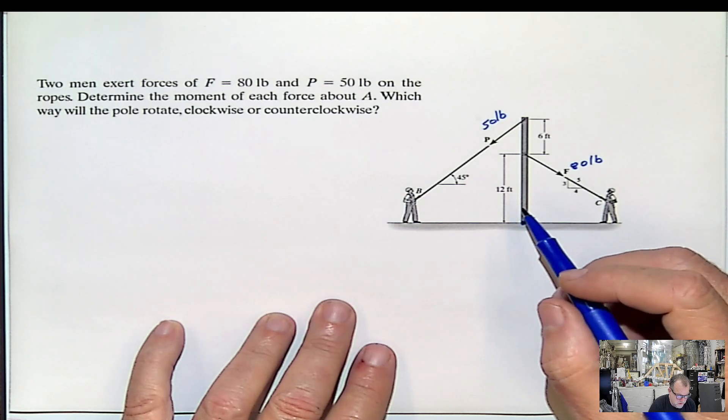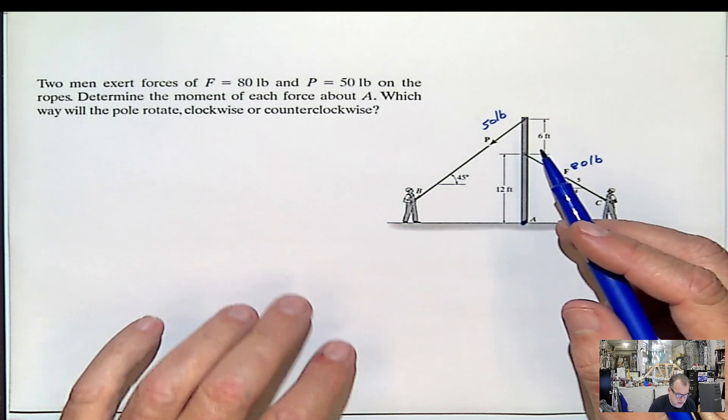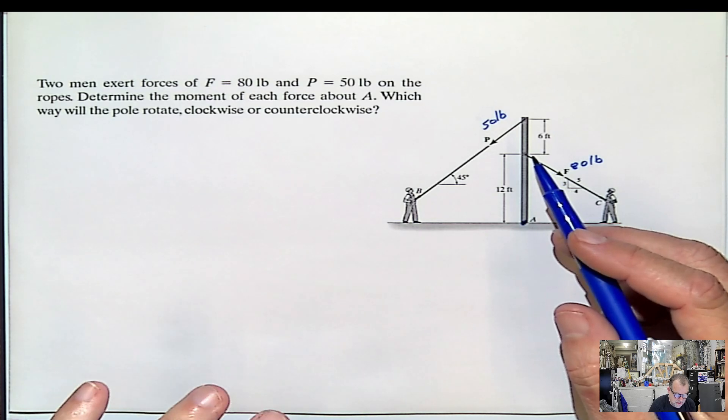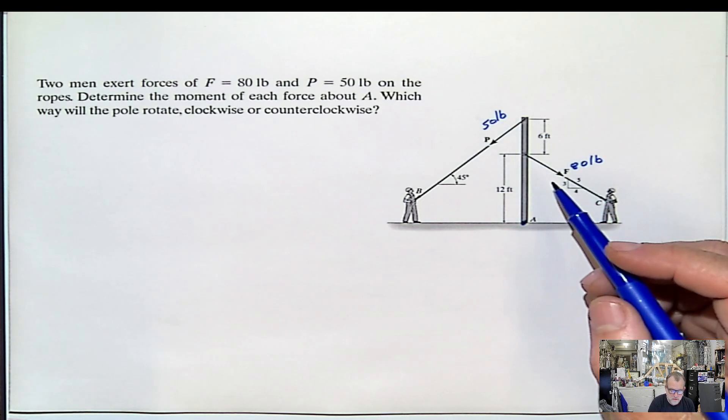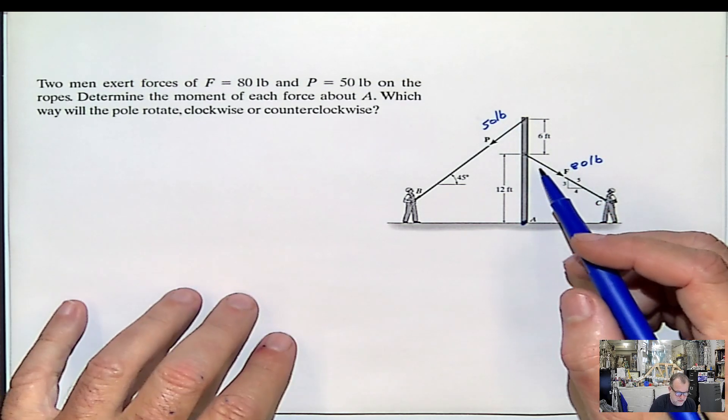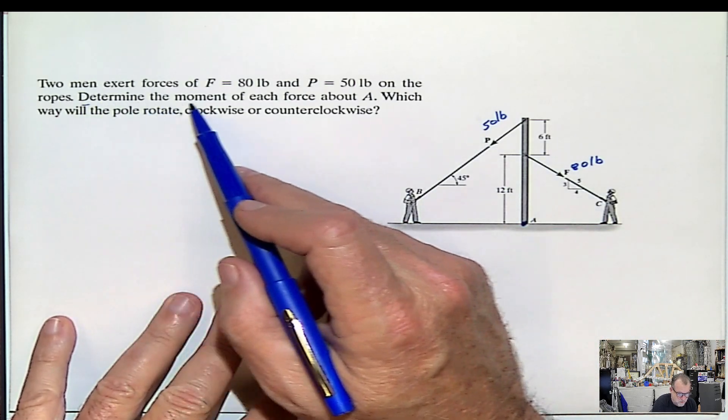And then which way the pole rotates? I wouldn't ask this problem like that. I will just say, determine in what direction the pole rotates, because it's basically spoon feeding you here what you have to do.